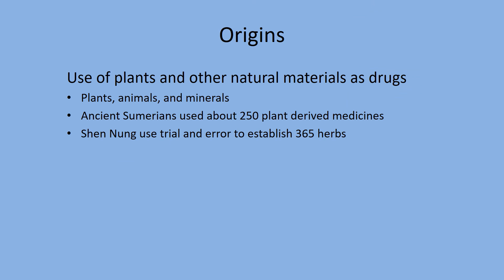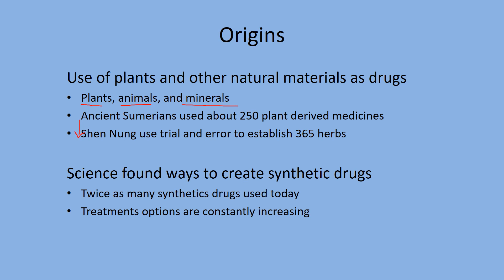The origins of medicine: there are three basic origins — plants, animals, and minerals — two living and one non-living. The ancient Sumerians, in what is nowadays the Iraq area — the first civilization on earth — used about 250 plant-derived medications. Then in China, about 365 herbs were used. Man's understanding of plants and medicine has increased over time. Nowadays we can synthesize our drugs using chemical processes to make the compounds we need.